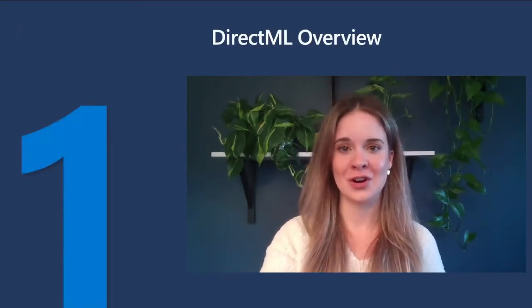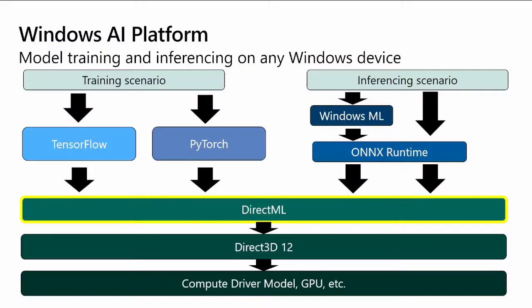So first let's get started with an overview of DirectML. DirectML sits within a tightly integrated stack of technologies built into Windows we call the Windows AI platform. Each layer has a specific purpose and together they give you the combined promise of high performance and ease of use. The Windows AI platform aims to make the job of training and inferencing an AI model in Windows applications a lot easier, by providing one platform that works across the breadth of Windows devices.